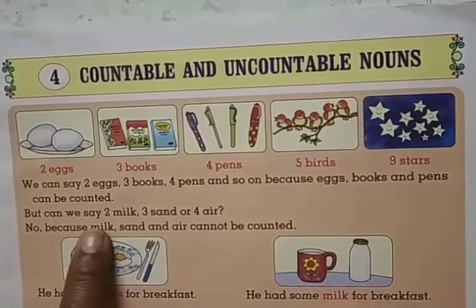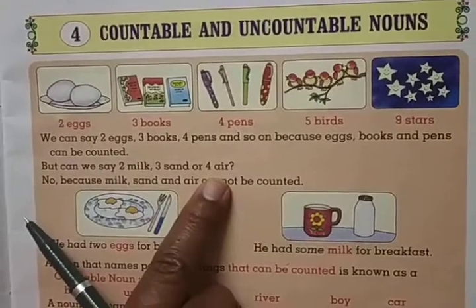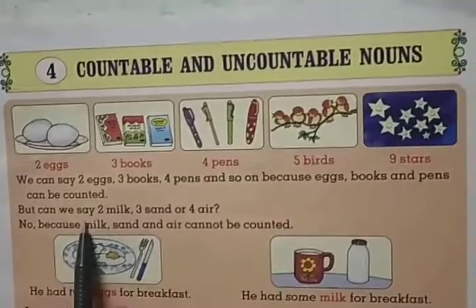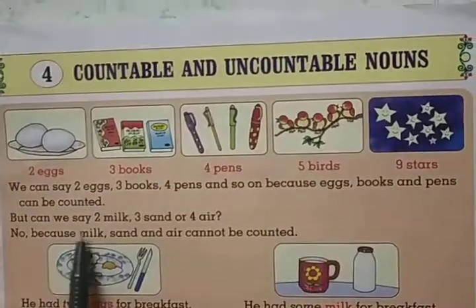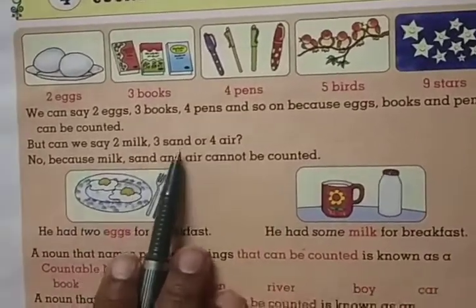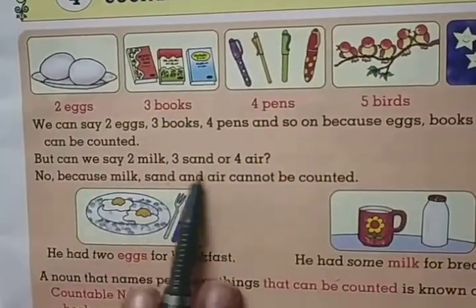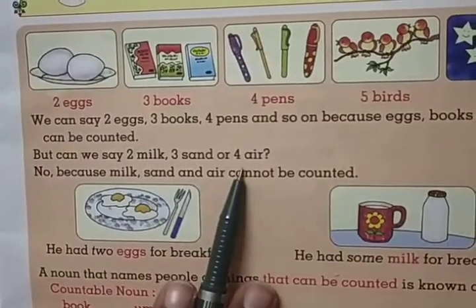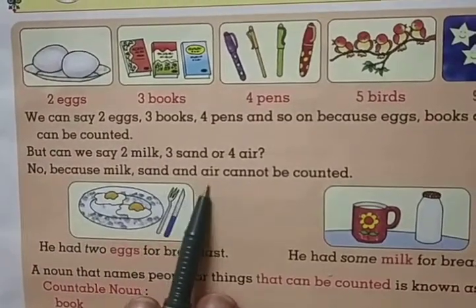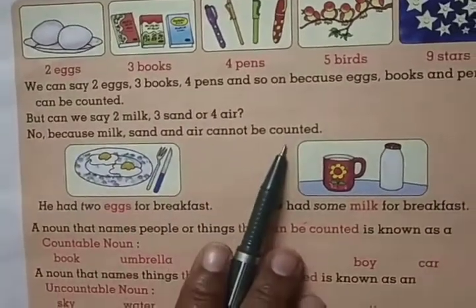Now see — can we say 2 milk, 3 sand, and 4 air? Can we count them? Obviously not. Because milk, sand and air cannot be counted. So milk, sand and air are uncountable nouns.